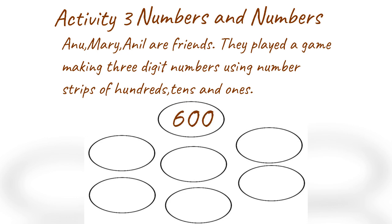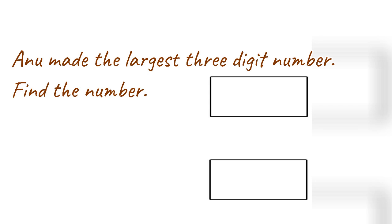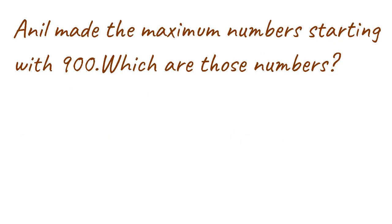The numbers available are 600, 900, 80, 60, 30, 7, and 2. Anu made the largest 3-digit number — find the number. Mary made the smallest number — find the number. Anil made the maximum numbers starting with 900 — which are those numbers?